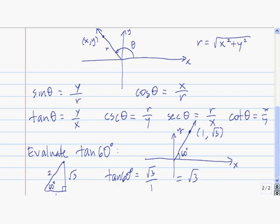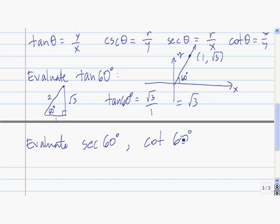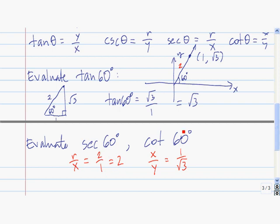You should have found that the secant of 60 degrees is 2, and the cotangent of 60 degrees is 1 over the square root of 3. The secant of theta is r divided by x. R is this length — using the Pythagorean theorem, that length is 2. The x coordinate is 1, so r divided by x is 2 over 1, which is 2. The cotangent of theta is x over y. For 60 degrees, x is 1 and y is root 3, so we get 1 over square root of 3.